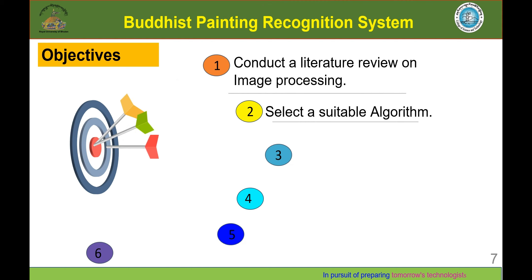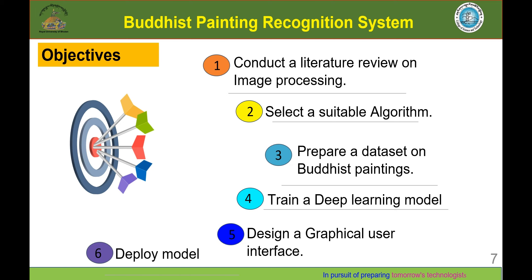The aim of our project was to develop a Buddhist painting recognition system using image processing. In order to achieve our aim, we came up with several objectives: to conduct a literature review on image processing, select a suitable algorithm, prepare a dataset on Buddhist paintings, train a deep learning model, design a graphical user interface for both mobile and web applications, and finally deploy the model.